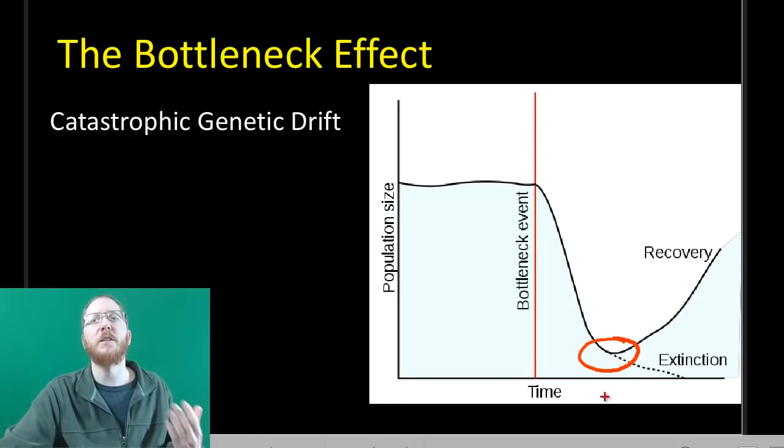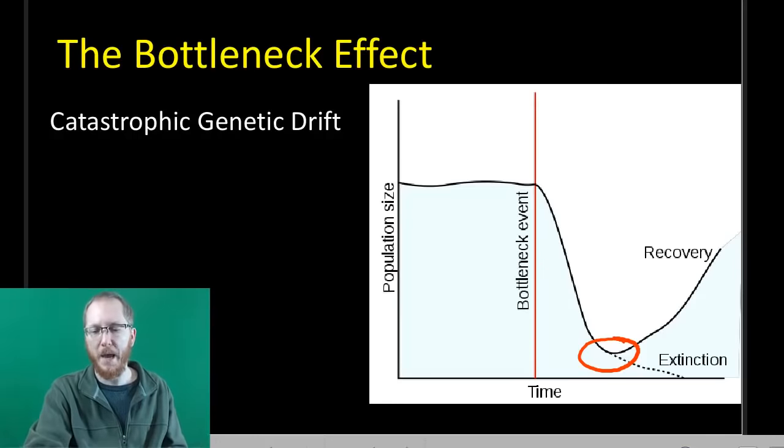You're going to get this precipitous drop in population size, and based upon who makes it through, you typically get a corresponding decrease in genetic variability. This is why it's so dangerous when certain species get to have a low population size, because they lose a lot of their genetic diversity along the way.